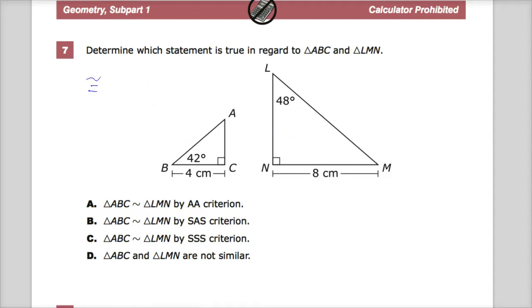But when I'm looking for similarity, I'm looking for two things. Number one, corresponding angles are congruent. So if I have a 48 in one, there needs to be a 48 in the other, and so on and so forth.